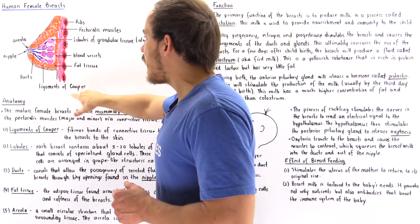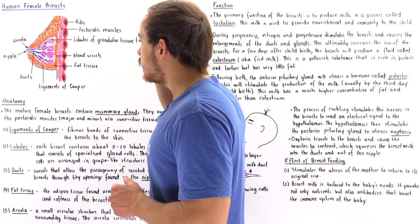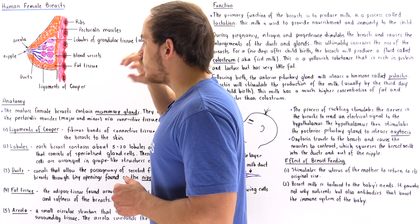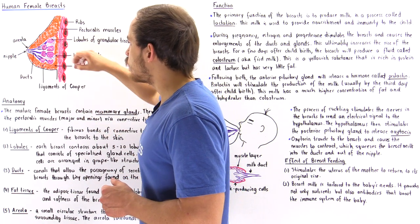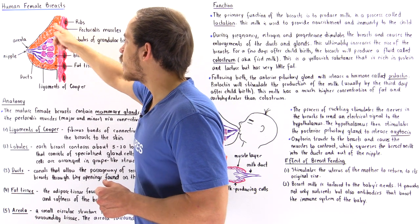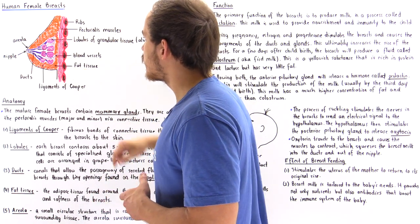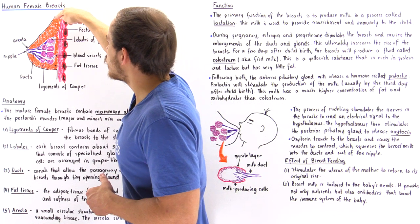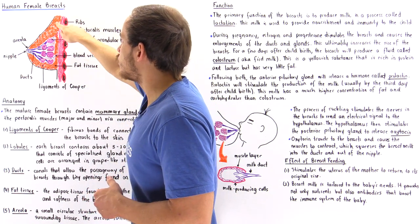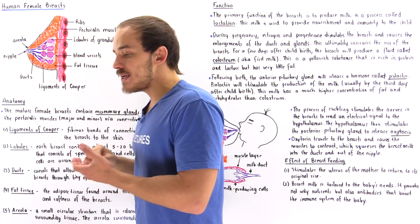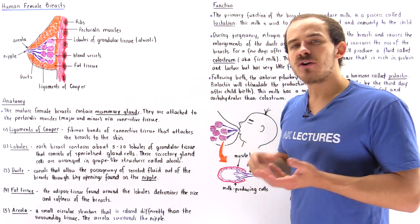We also have the ligaments of Cooper, which are essentially fibers — bands of connective tissue — that connect the entire breast to the skin that encloses the breast. We also have adipose tissue, the fat tissue shown in orange, and the fat tissue basically determines the size of the breast.